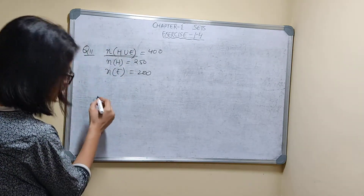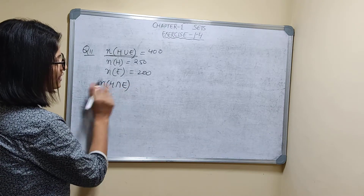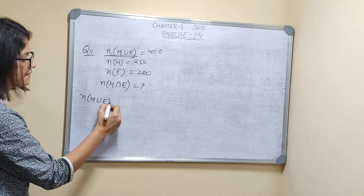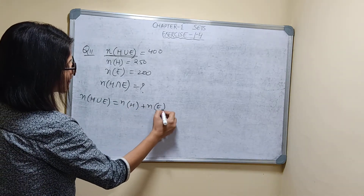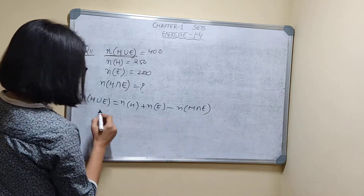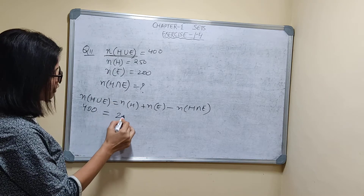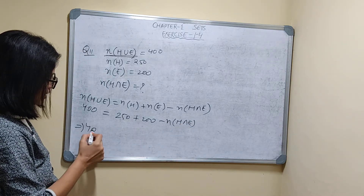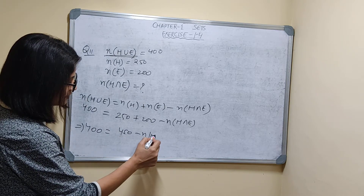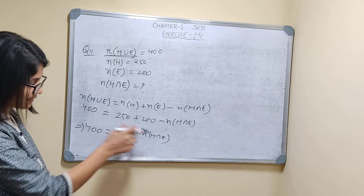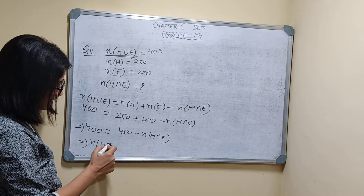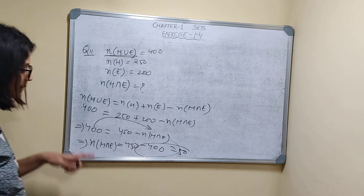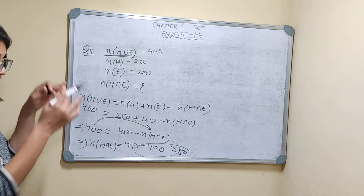They are asking how many can speak both Hindi and English, meaning N(H∩E). Using the formula N(H∪E) = N(H) + N(E) − N(H∩E): 400 = 250 + 200 − N(H∩E), so 400 = 450 − N(H∩E), therefore N(H∩E) = 450 − 400 = 50. So 50 students know both Hindi and English.